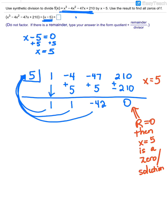Now, originally we started with x cubed. Once you carry out synthetic division, the power of x has decreased by 1. So this is now 1x squared, positive 1x, and minus 42. If we wanted to find the remaining zeros, we take this polynomial, set it equal to 0, and solve. Notice it is a quadratic — always try to factor first. If it doesn't factor, then you'll use the quadratic formula. Luckily in this case, it does factor.